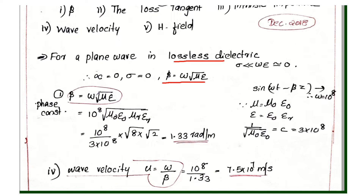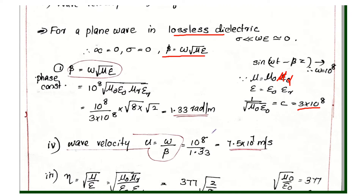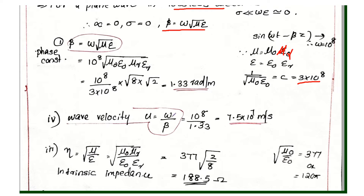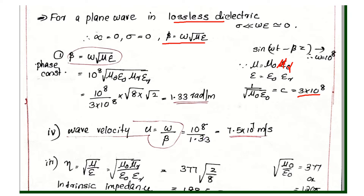Omega is 10 raised to 8. Mu is equal to mu 0 into mu r, and epsilon is equal to epsilon 0 into epsilon r. Note that 1 by root of mu 0 epsilon 0 equals c, which is 3 into 10 raised to 8 meters per second. With mu r equal to 2 and epsilon r equal to 8, root of mu r into epsilon r gives the scaling factor.